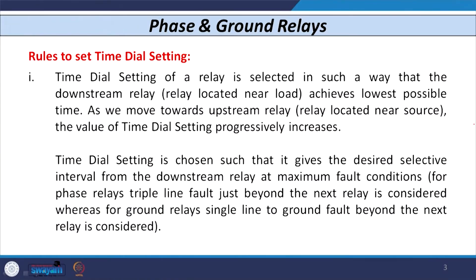Similarly, let us discuss the rules to decide the time dial setting of phase and ground relays. The time dial setting is selected such that whichever relay is located near the load achieves the lowest possible time, and as we move from a downstream relay to an upstream relay, the time dial setting value increases. The time dial setting is chosen to give the desired selective time interval between downstream relays for maximum fault conditions.